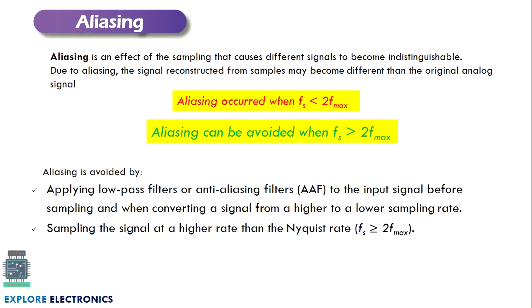The next topic is aliasing. Aliasing is an effect of sampling — it causes different signals to become indistinguishable. Due to aliasing, when we are reconstructing the signal from the samples, it may become different from the original one.